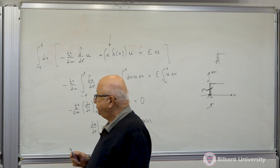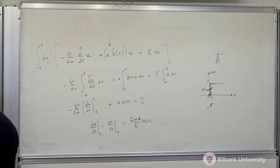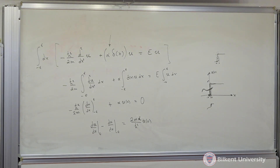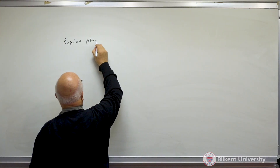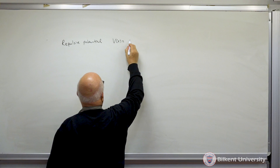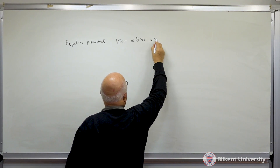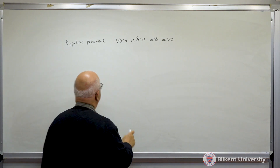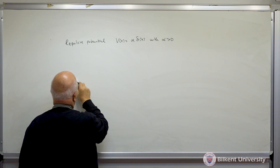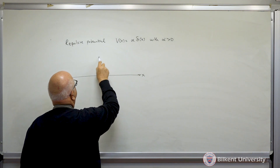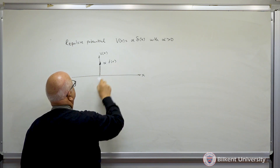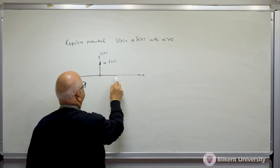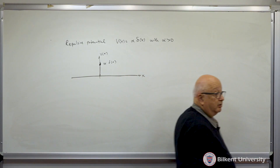Now let's go back to our problem. If we have a repulsive potential, V(x) = alpha·delta(x) with alpha greater than zero — a positive potential — the potential is zero everywhere except at the origin. Since this is a repulsive potential, there is no way to get a bound state. So I start sending a particle in with some energy E, and it's the free particle solution on both sides because the potential energy is zero on both sides.